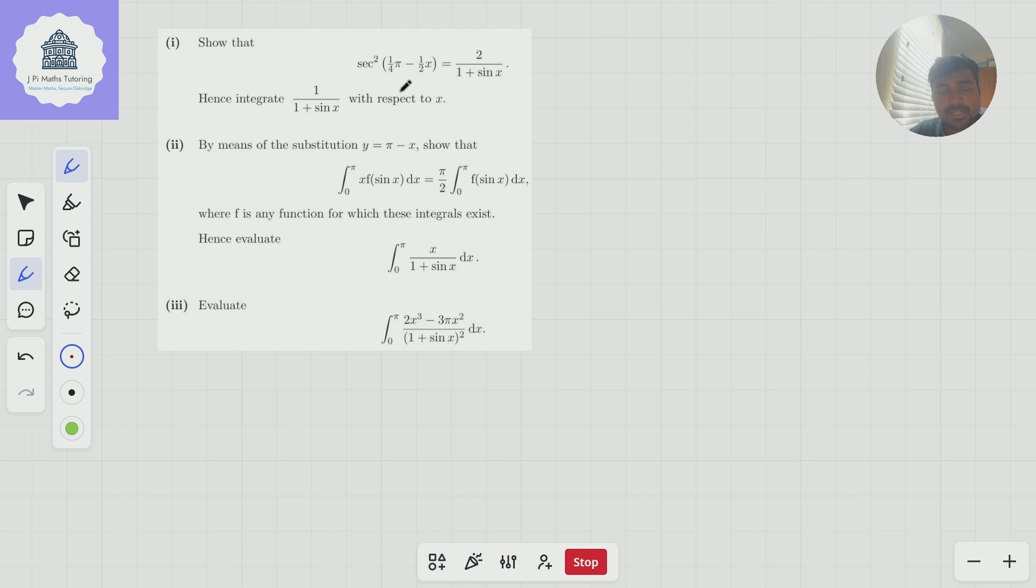So part one, we want to show that sec squared of a quarter pi minus a half x is two over one plus sine x. Hence, integrate one over one plus sine x with respect to x. Part two, by means of the substitution y equals pi minus x, show that the integral from 0 to π of x f of sine x dx equals pi over two times the integral from 0 to π of f of sine x dx, where f is a function for which this integral exists. Hence, evaluate the integral from 0 to π of x over one plus sine x dx.